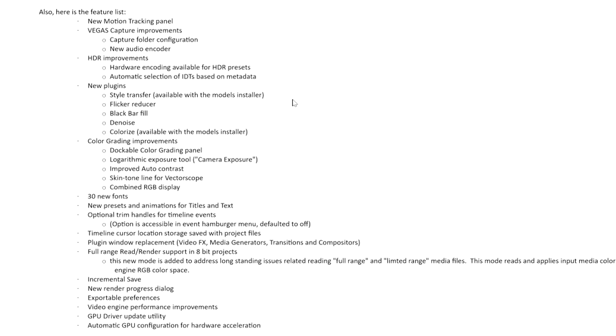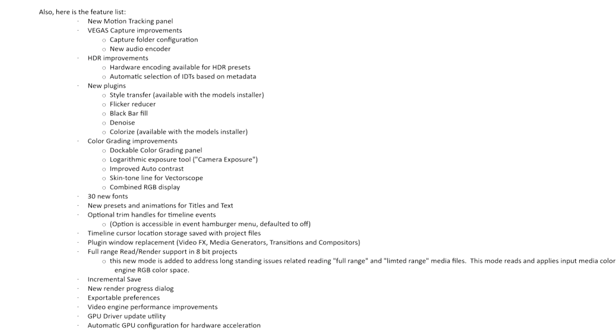This is the feature list from my manager at Magix — here's what's new in Vegas Pro 18. We have the new motion tracking panel, HDR improvements, new plugins, color grading improvements, 30 new fonts, new presets and animations for titles and text, optimal trim handles for timeline events, and incremental save — which is similar to what Adobe calls increment and save. I did a video on the incremental save in Vegas Pro last week. It's really, really handy so you don't have to keep overriding the same project when making changes — just like Adobe Premiere Pro and After Effects have.